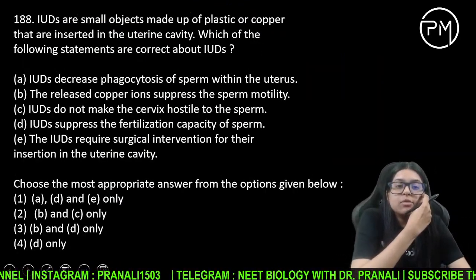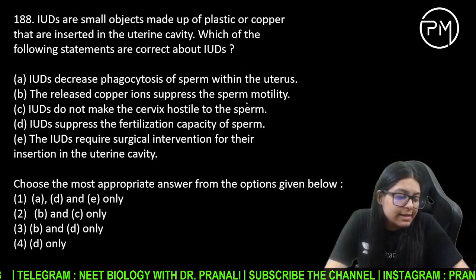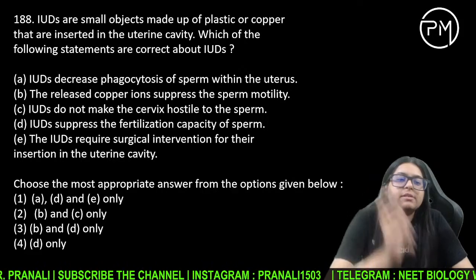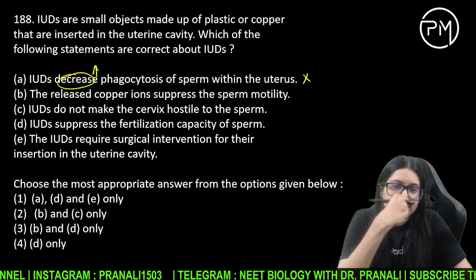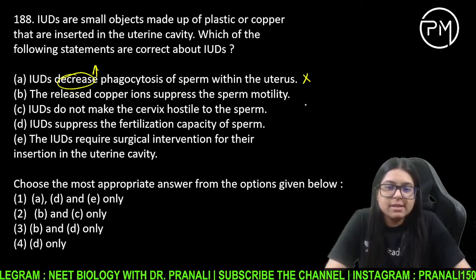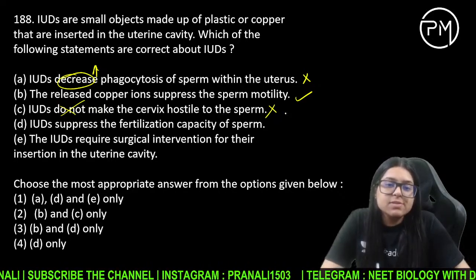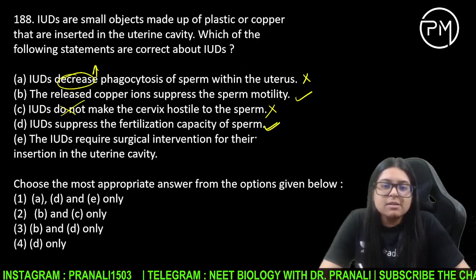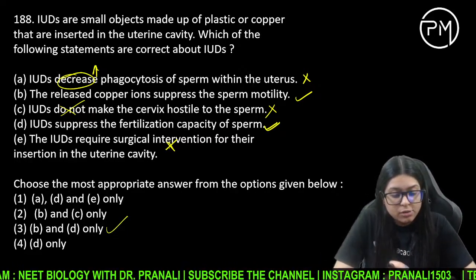IUDs ke baare mein correct statements: IUD phagocytosis increase karte hain decrease nahi. Released copper ions suppress sperm motility — yeh sahi hai. Do not make cervix hostile to sperm — galat hai, it makes cervix hostile. Surgical intervention chahiye IUD ko — nahi chahiye. Toh answer B aur D ho jayega.